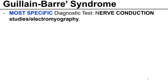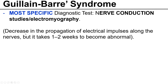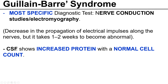The most specific test for Guillain-Barré syndrome is nerve conduction studies. It tells you there is decreased propagation of electrical impulses along the nerves — slowed conduction signals. However, it takes about one to two weeks to become abnormal, so in the first two weeks you may have normal nerve conduction studies. CSF typically shows increased protein and normal cell count, as in this question. However, the most urgent test would be the pulmonary function test.